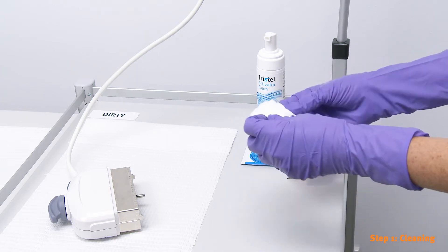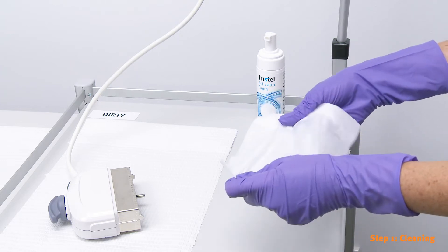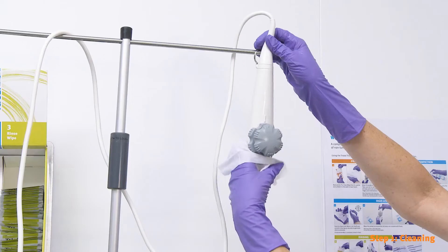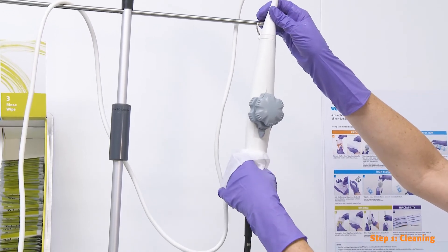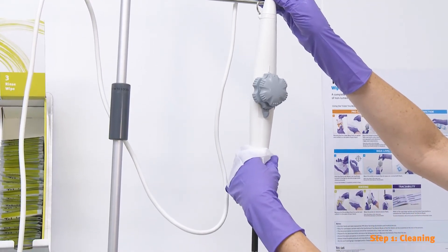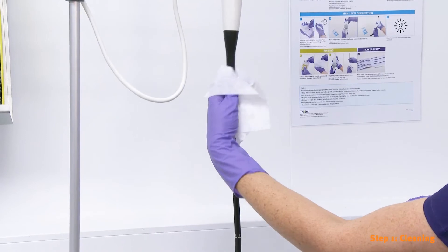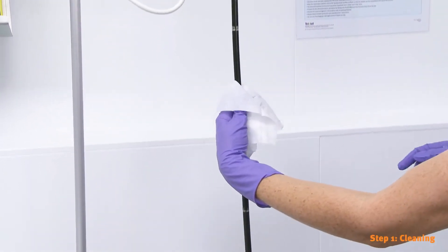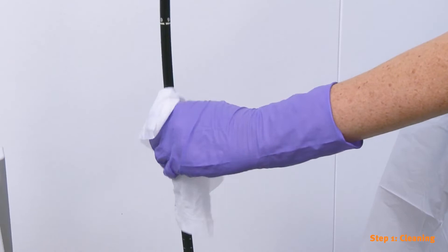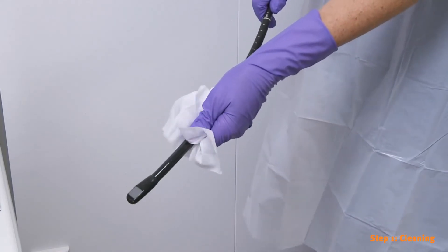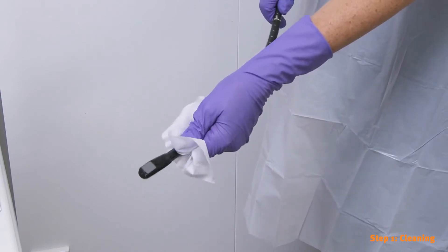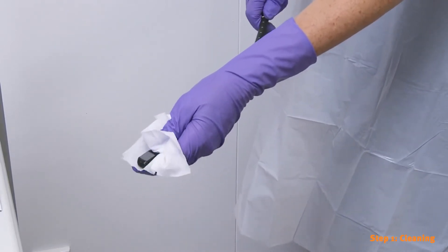Remove the wipe from its sachet and unfold it in the palm of your hand. Wipe the toe probe handle and insertion tube to remove all visible soil. Pay particular attention to the edges, ridges and indentations. Take care not to bend the instrument. If the device is heavily soiled, a second Pre-Clean Wipe may be used.